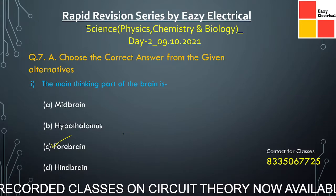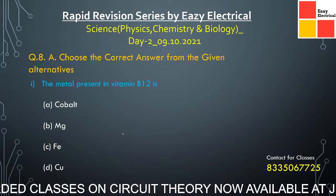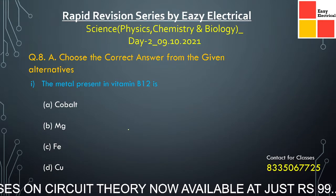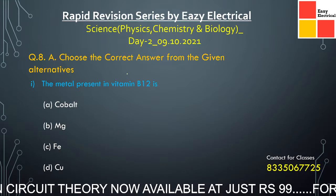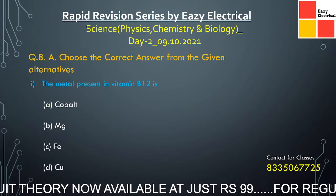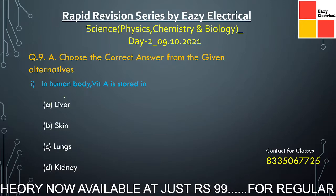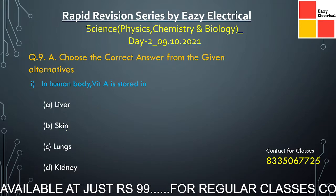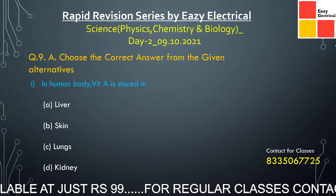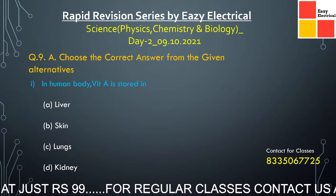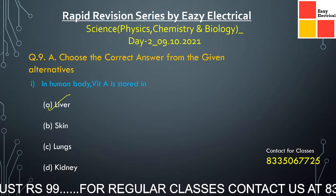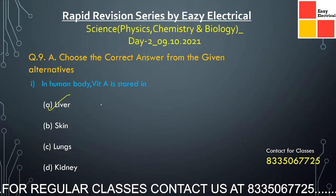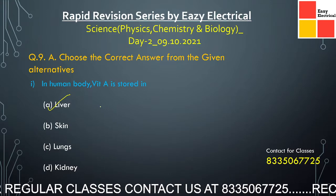Next question: the metal present in Vitamin B12 is — cobalt, magnesium, iron, or copper? The correct option is cobalt. Next question: in the human body, Vitamin A is stored in — liver, skin, lungs, or kidney? Vitamin A and D both are stored in the liver. The liver stores fat-soluble vitamins, which are A, D, E, and K.